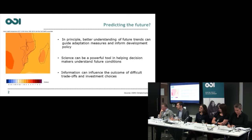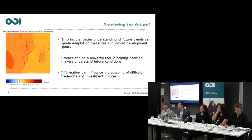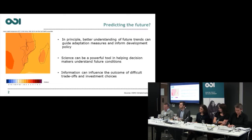Why is that important? In principle, that understanding of the future — or a better understanding of the future — should help us in designing adaptation measures, it should help us in informing our development trajectories. We look to science to tell us what the future might look like, what the trends are, and what we can infer from those.